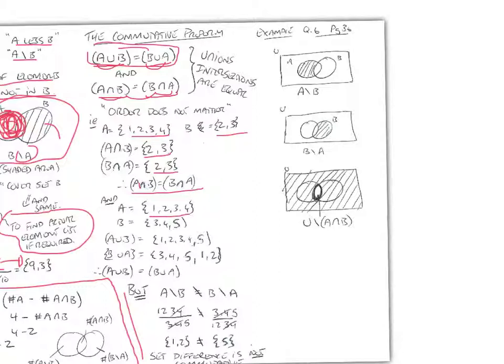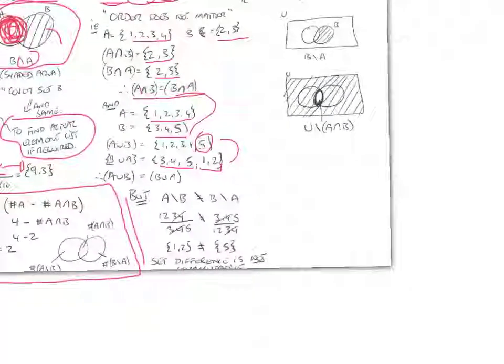And if A is 1, 2, 3, 4, and B is 3, 4, 5, let's look at A union B. So, we write out our 1, 2, 3, 4, and we need to add on our 5, and B union A, we write out our 3, 4, 5, and we add on our 1, 2. And let's see A union B equal to B union A. Yes, they are.